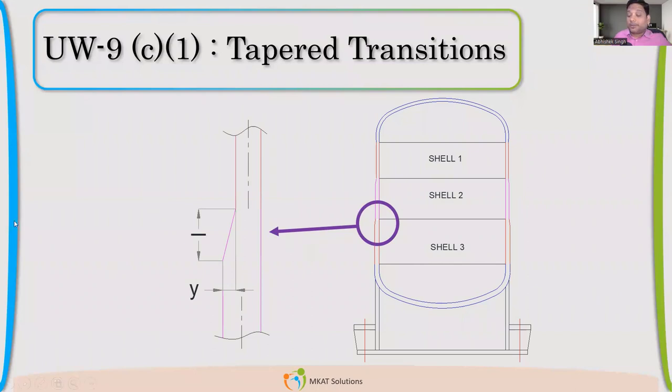The requirement is very simple. See this L and Y is the difference. So, Y divided by L, the offset divided by the length of taper. That should be in ratio of 1 is to 3, less than 1 is to 3.